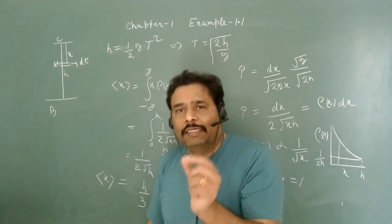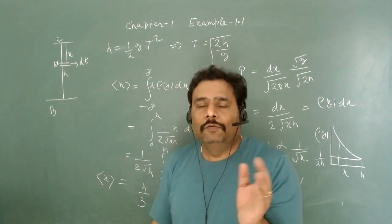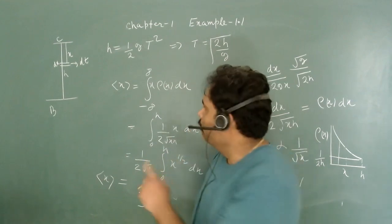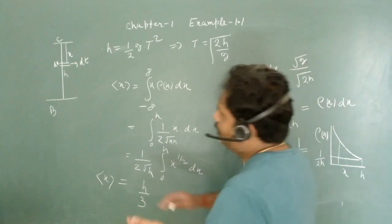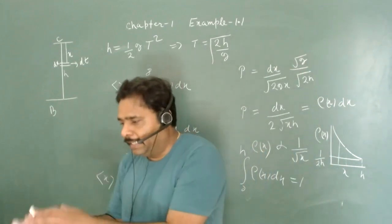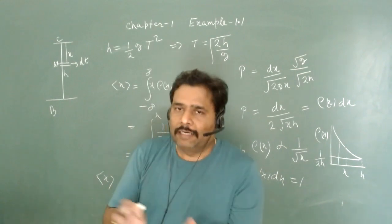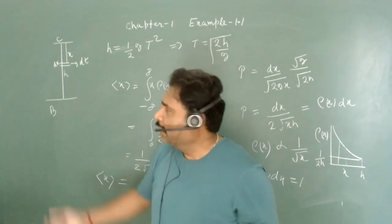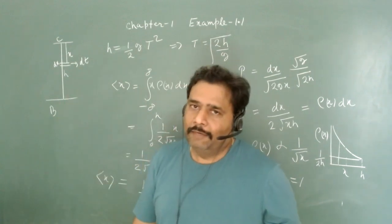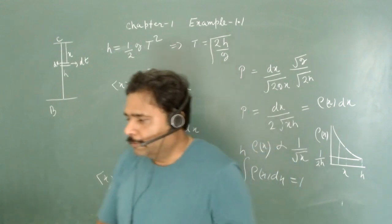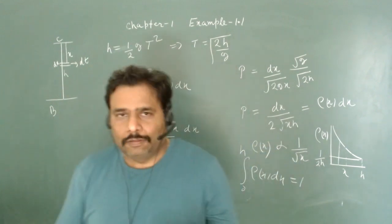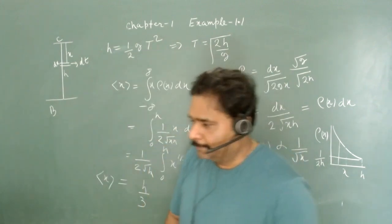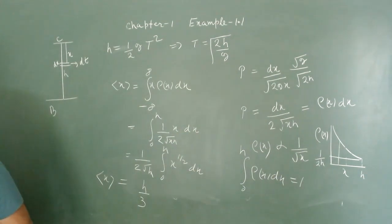We can think about why: at a particular position x to x+dx, how much time the particle spends there determines the probability. Since the particle speeds up as it falls, it spends less time near the bottom. Time and distance are correlated via kinematics, and using these formulas we can find the probability density and average value of x. In the next video we will solve different problems.